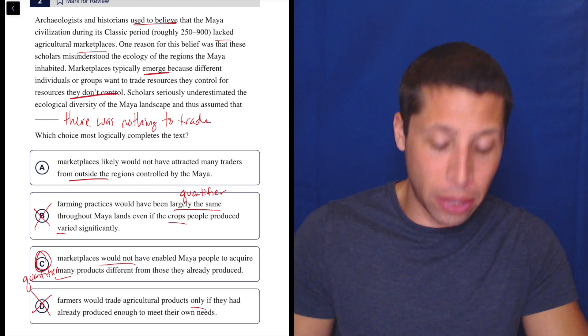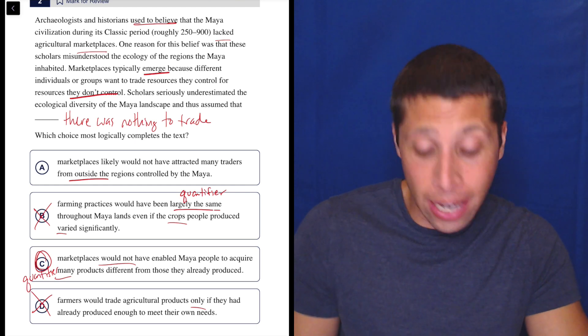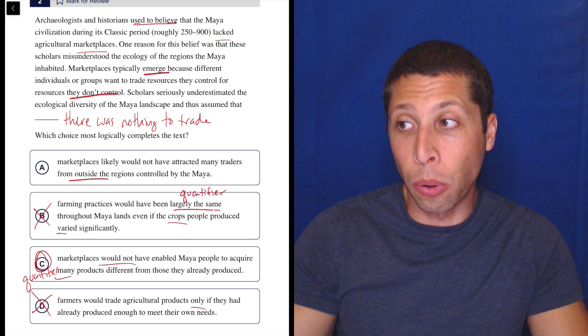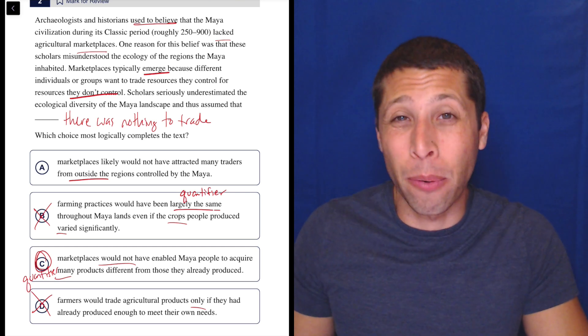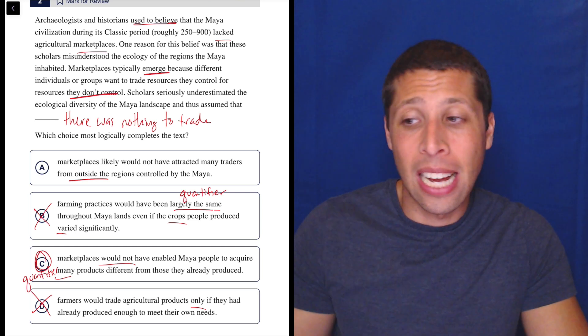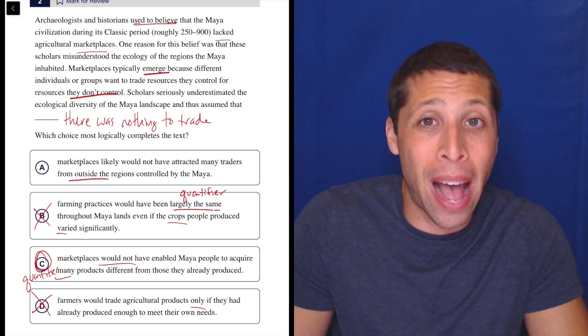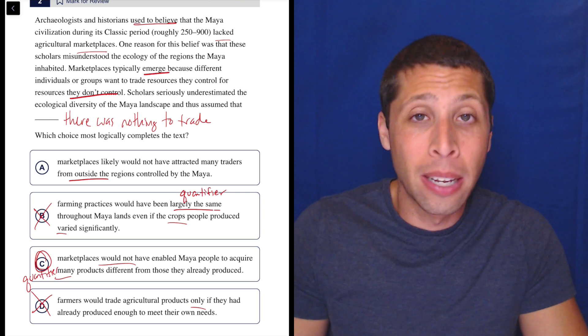And we wouldn't have a marketplace if they all had the same stuff because then there'd be nothing to buy. Annoying question, but I'd be pretty confident in this. And going back to A, I'm just not convinced that they ever talked about people outside the Maya. So I kind of kept it in because I wasn't 100% sure, but when I see C, it's just a better choice. So sometimes that's what happens and no need to go back. I wasn't in love with A anyway. So pick C and move on.